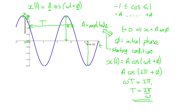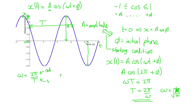The period of the system is inversely proportional to ω. For our mass-spring system, ω equals the square root of k over m — as mass increases, ω decreases; as the spring constant k increases, ω increases. Rearranging, ω equals 2π over the period. Since 2π is in radians and the period is in seconds, ω has units of radians per second. So we call ω the angular frequency.